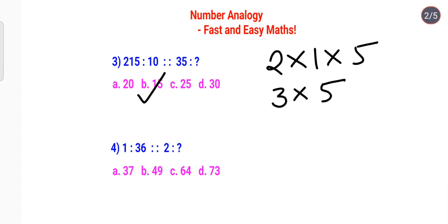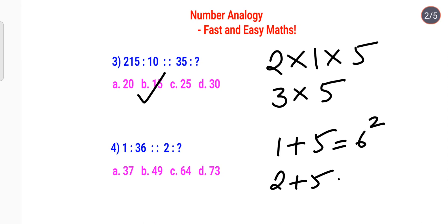Now let's look at: 1 is to 36. When I add 1 + 5 I get 6, and 6 squared gives me 36. Similarly, 2 + 5 gives 7, and 7 squared gives the answer 49. I hope you're getting the hang of it and are gaining a bit of confidence in doing these kinds of questions for your entrance exams.